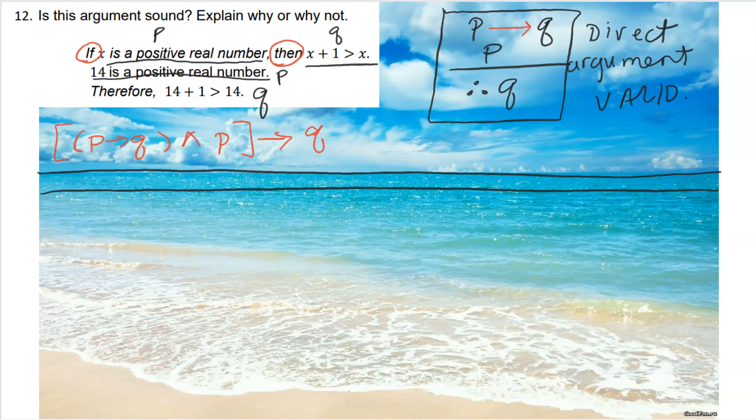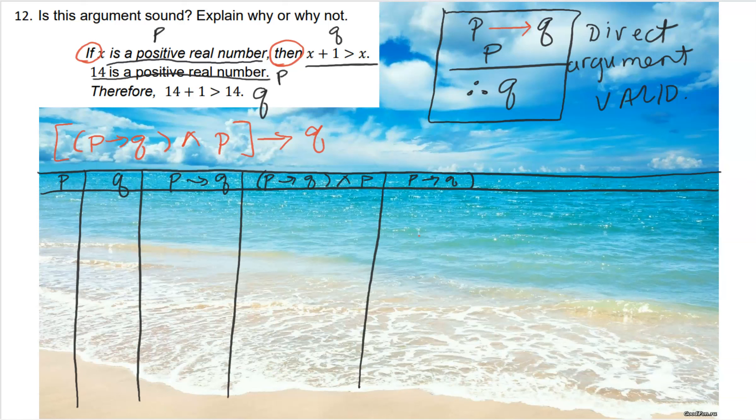So here we go: P, Q, P then Q, and then P, and then P then Q and P. And then lastly, we would say the entire statement: will P then Q and P lead to the conclusion Q? So true true, true false, false false, true false. If true then true, the statement is true. If true then false, the statement is false. If false to start with, the statement is true no matter what.